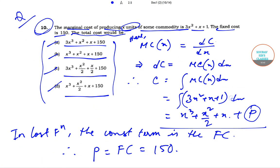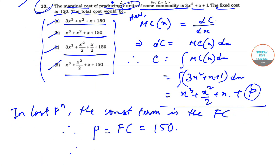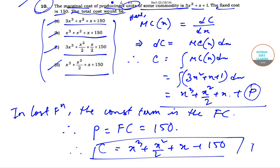that will give us C = x³ + x²/2 + x + 150, which is option D. So today we have solved question number 10 from the JNU School of International Studies MA Economics question paper of year 2016.